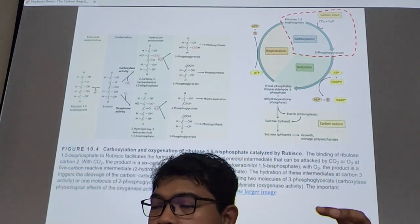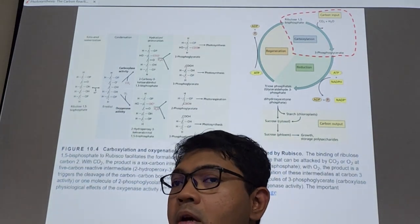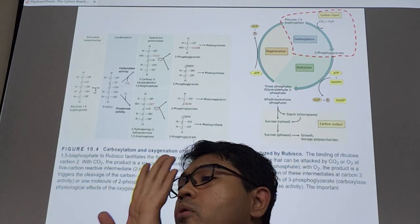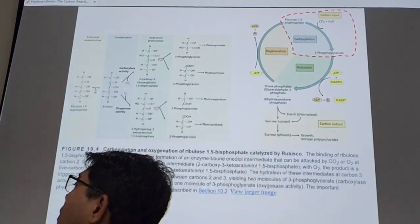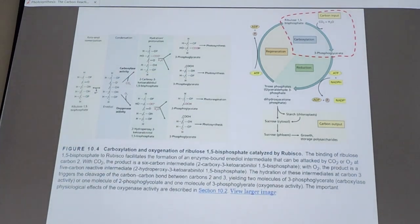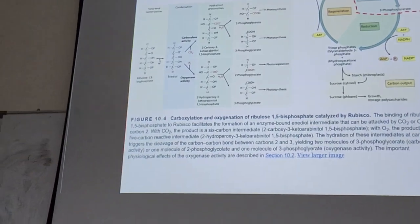Because this RuBP, depending on RuBisCO, the enzyme that acts upon it, will either bind to oxygen or CO2. And that is the problem with RuBisCO. So you cannot blame RuBP, blame RuBisCO.